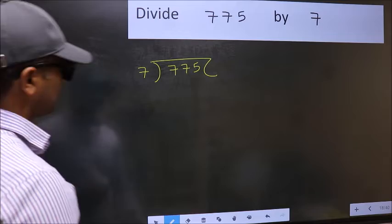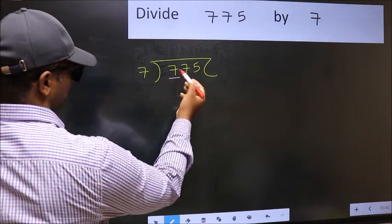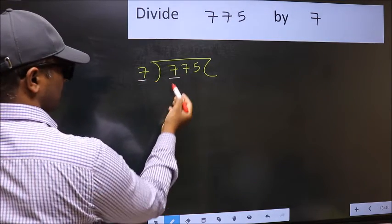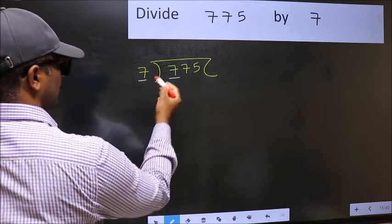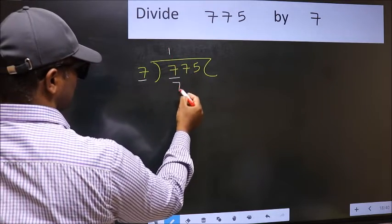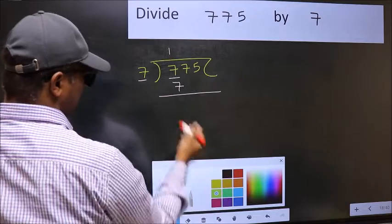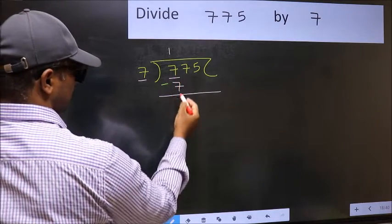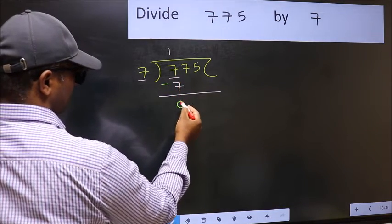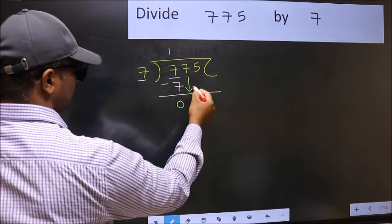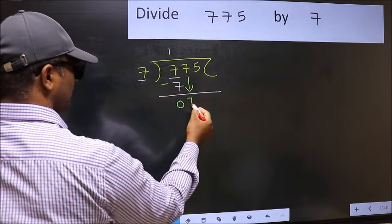Next, here we have 7 and here also 7. When do we get 7 in the 7 table? 7 once is 7. Now you should subtract. 7 minus 7, 0. After this, bring down the beside number. So 7 down.